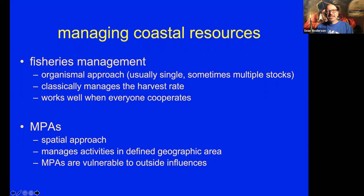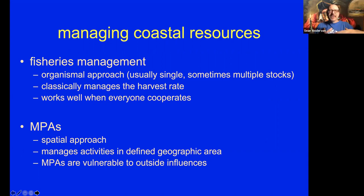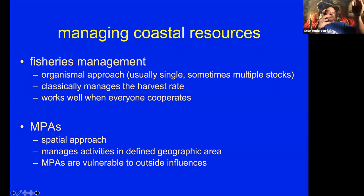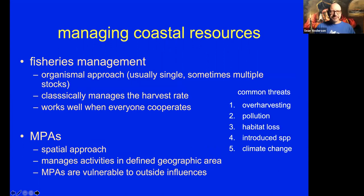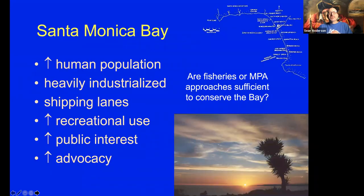If there are cheaters, disincentives, or other complications, it doesn't work well — and one of the reasons we have our overfishing problem on the planet is because of that. But theoretically it can work well. Marine protected areas — MPAs — are a classic spatial approach to managing coastal resources. An MPA is a geographically defined area — a reef, a bay, something of that nature — where we restrict the activities that go on inside that pocket of space, while what happens outside we don't manage with this approach.